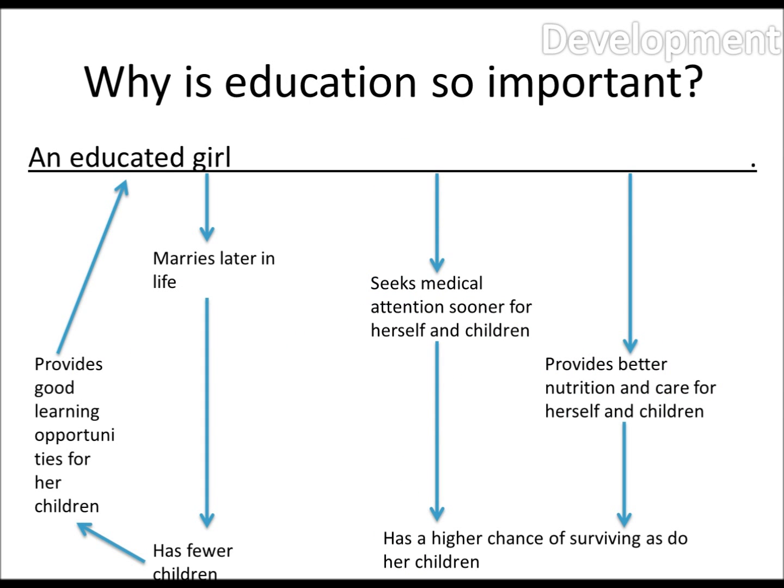So why is education so important and why have they chosen it as one of the universal goals to achieve by 2015? Well, if we take a girl as an example, an educated girl in general marries later in life, so she has fewer children because she's had family planning. It provides good learning opportunities for her children. She will seek medical attention sooner for her children and herself because she knows a little about medicine. She also provides better nutrition and care because she knows what food is good and bad. And because of those, she has a higher chance of surviving parenting, as do her children.